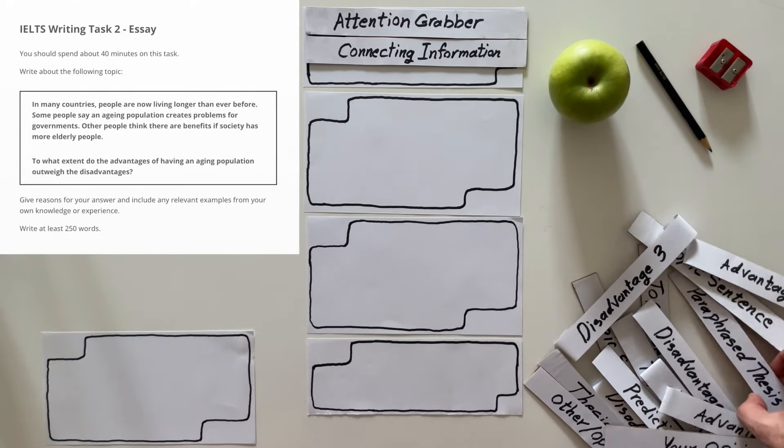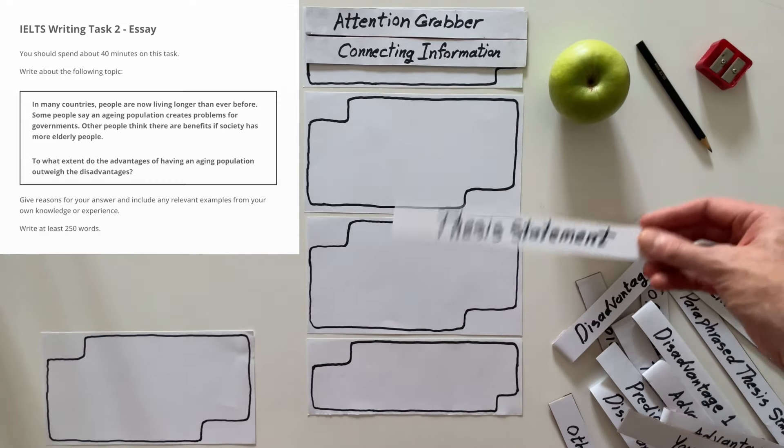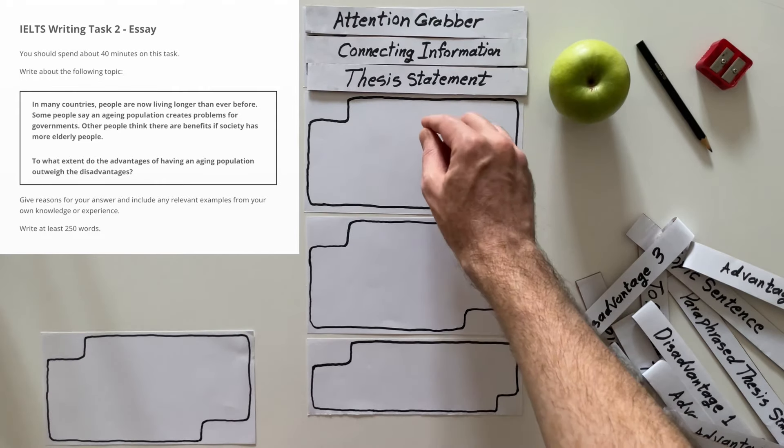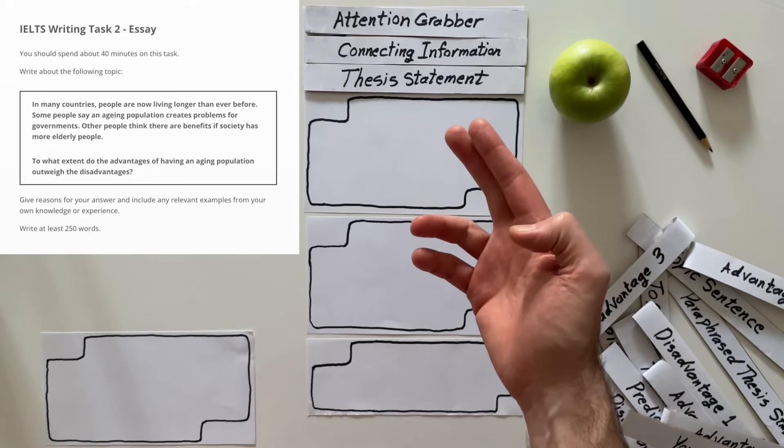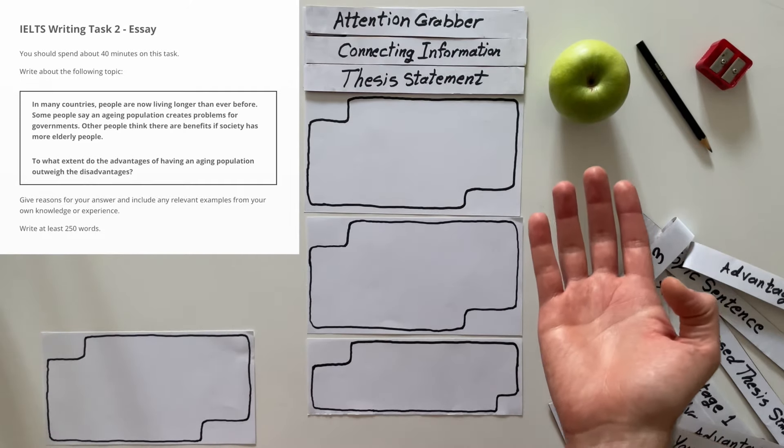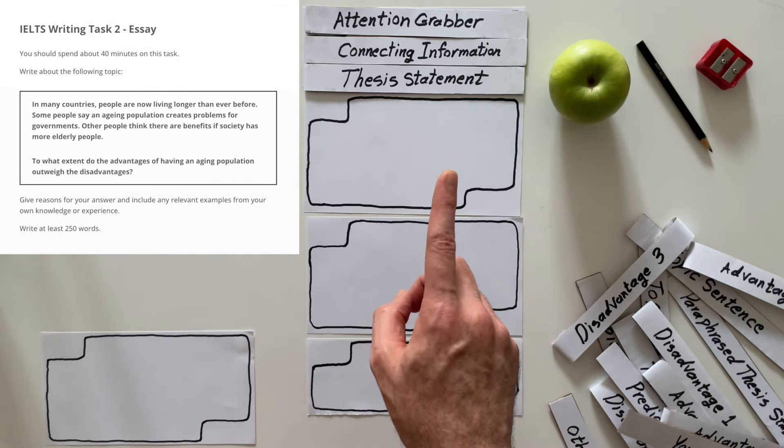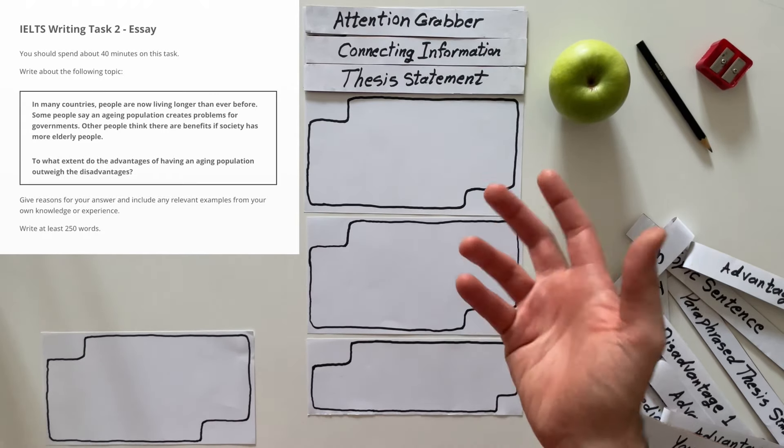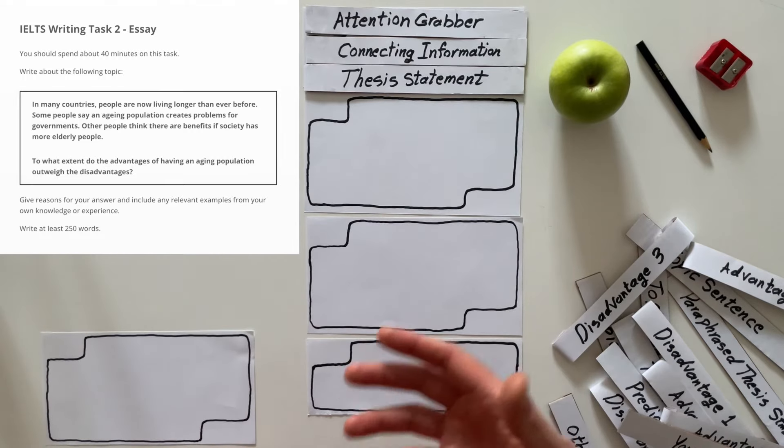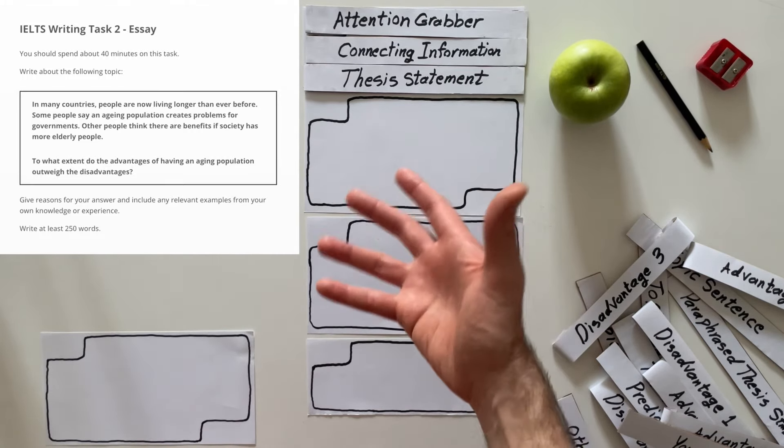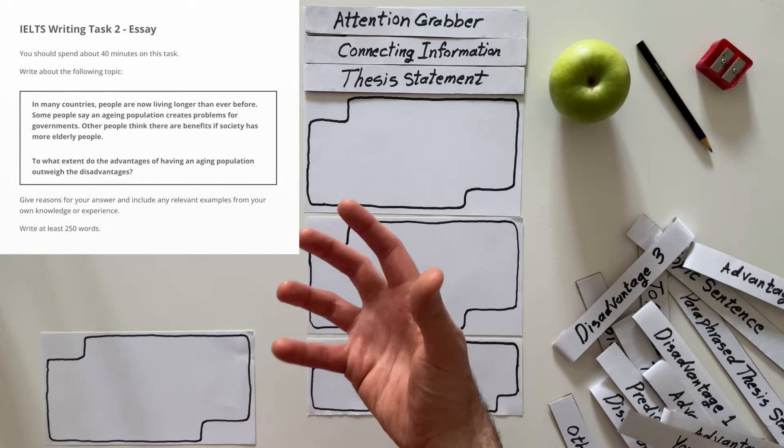Now, here is the tricky part. You need to, of course, come up with your thesis statement, the most important sentence of your entire essay. And you need to say, okay, do you believe that there are more advantages of having old people, or there are more disadvantages in having more old people? Which one is it? That's the question you need to ask. For simplicity's sake, in this case, I'm going to say that there are more advantages than disadvantages. So, society is better off if you have old people. If you have old people, there are more advantages to having a group of elderly people in society than disadvantages.